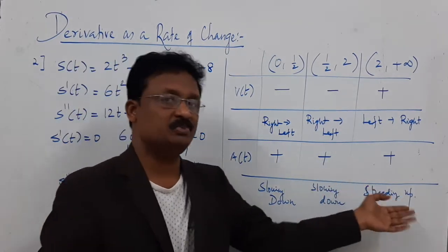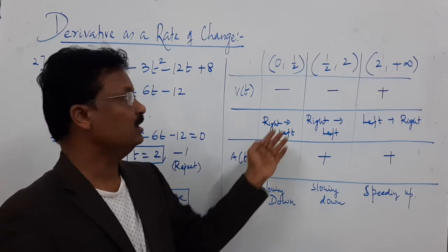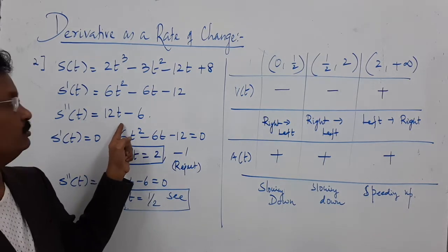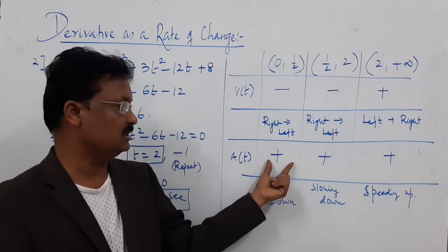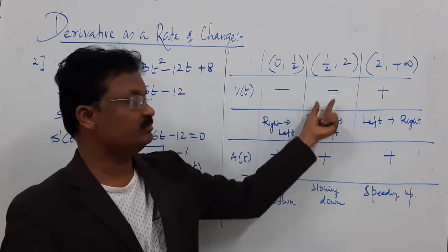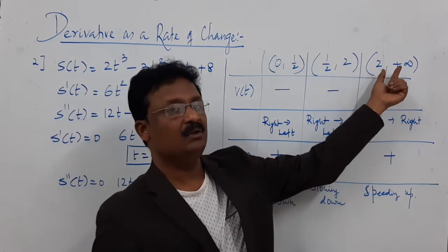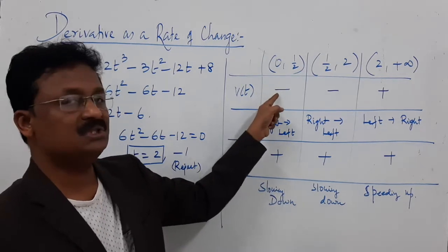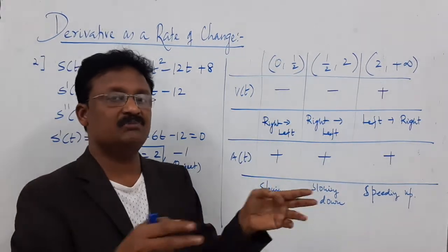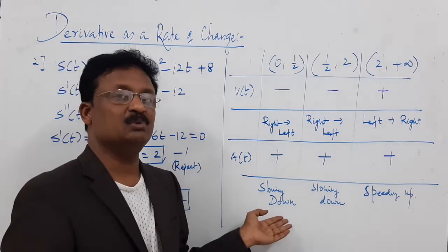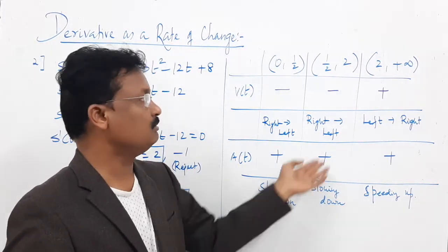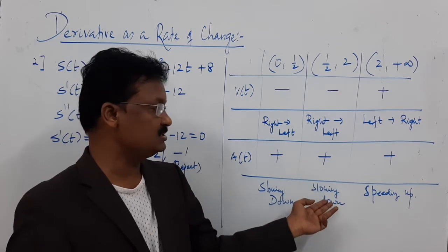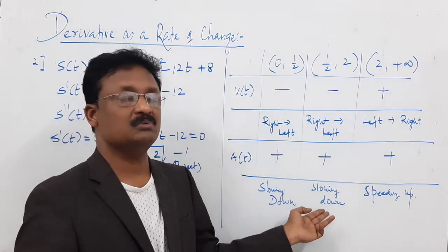Now for slowing down or speeding up, apply the same interval values in acceleration. For t = 0.25: 12(0.25) − 6 is positive. If velocity is negative and acceleration is positive — opposite signs — the particle is slowing down. For the interval 2 to infinity, acceleration is also positive. Same sign for velocity and acceleration means the particle is speeding up.